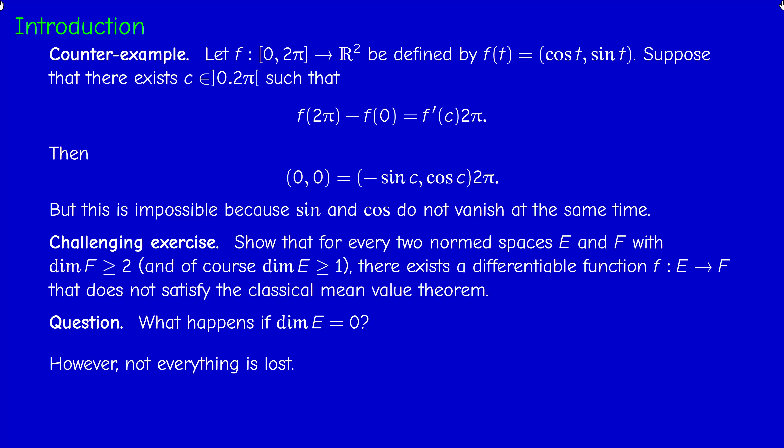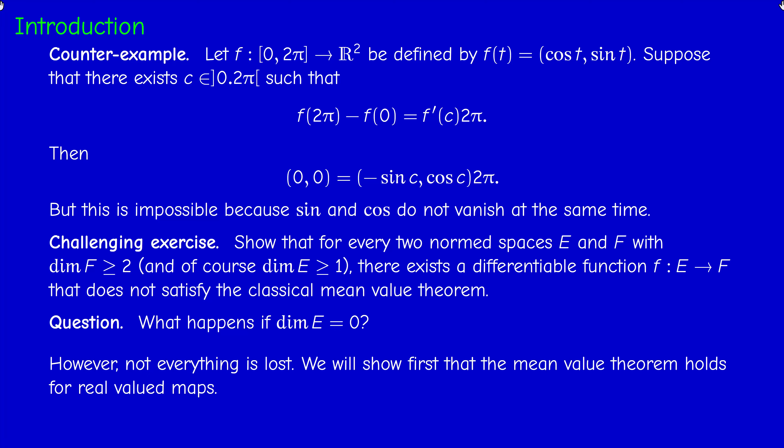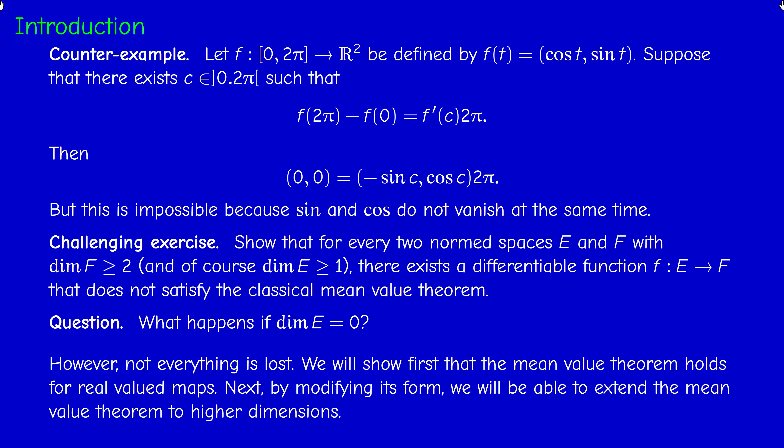Not everything is lost, however. First, we will show that the Mean Value Theorem holds for functions defined on an open subset of a normed space taking values in ℝ — so the target space has dimension 1. This will be our first extension of the Mean Value Theorem. The next extension will be obtained by modifying the form of the theorem slightly.